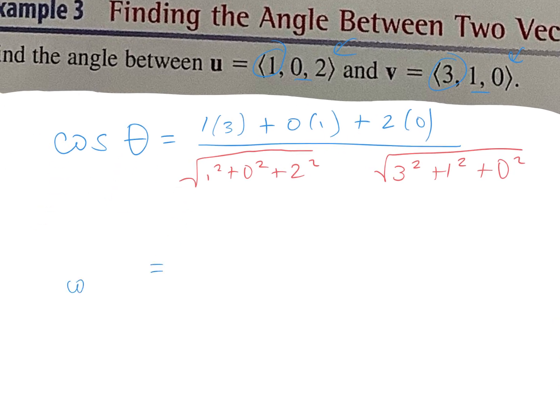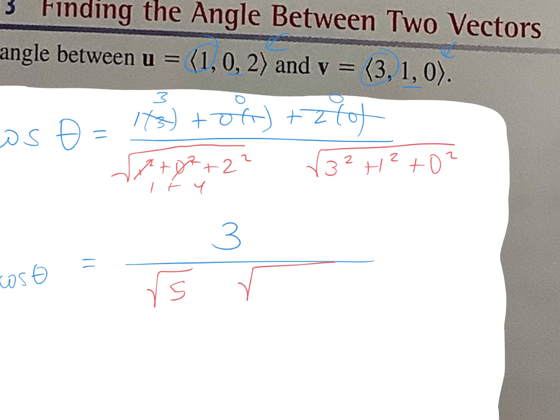And now let's just simplify. Let's simplify the numerator. So this is cosine of theta out here. So I have 3 plus 0 plus 0 is 3. And then in my denominator, 1 squared is 1 plus 0 plus 4. So it's the square root of 5. And then over here, I have 9 plus 1 plus 0. So square root of 10.